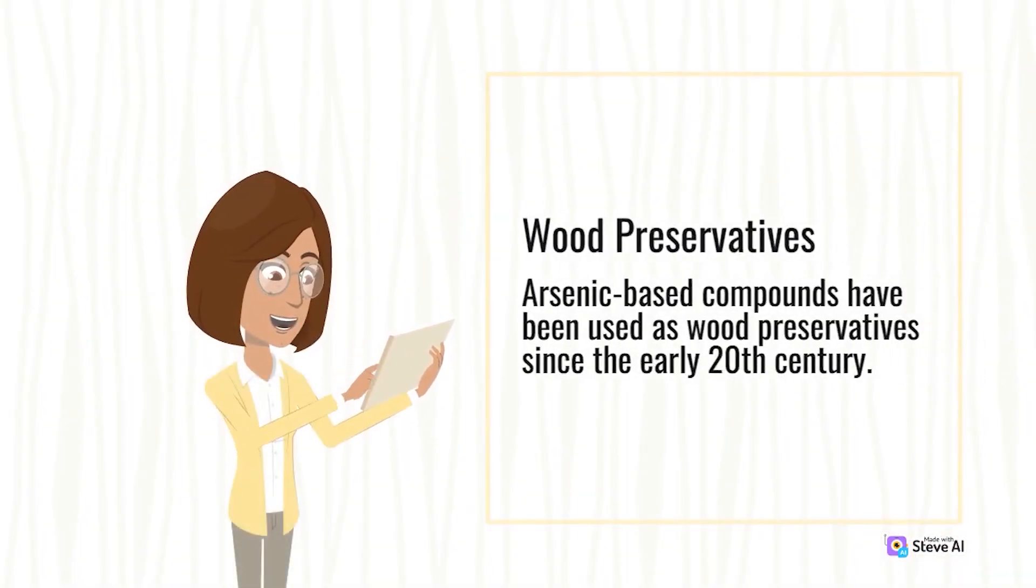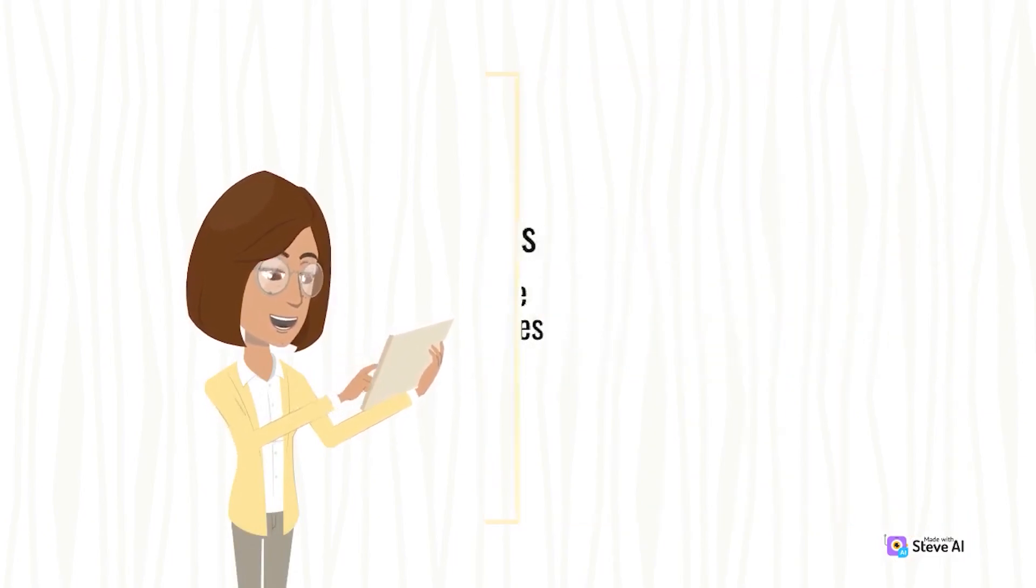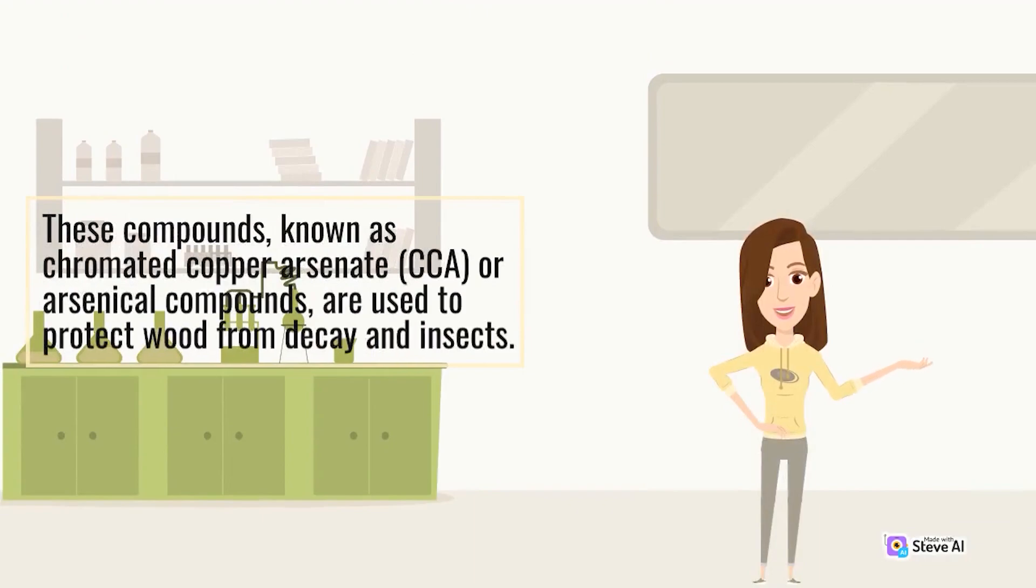Arsenic-based compounds have been used as wood preservatives since the early 20th century. These compounds, known as chromated copper arsenate (CCA) or arsenical compounds, are used to protect wood from decay and insects.